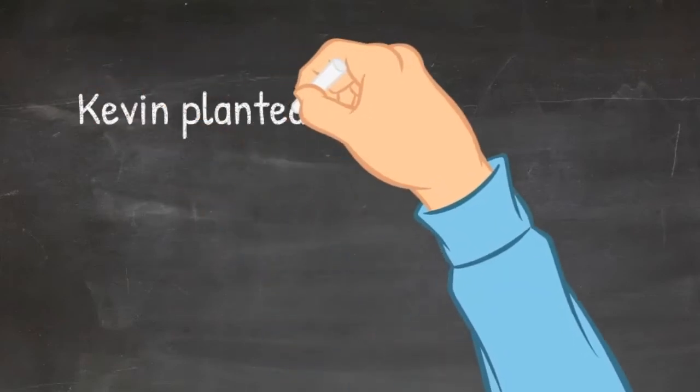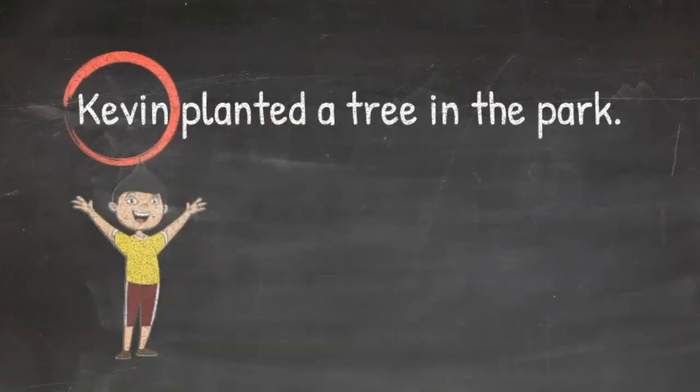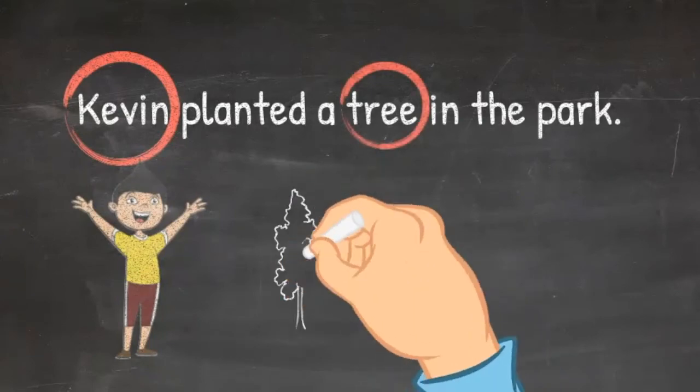I'll do the next one. Kevin planted a tree in the park. Kevin is a noun, it is a person. Tree is also a noun, it is a thing. And park is a noun, it is a place.